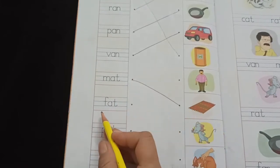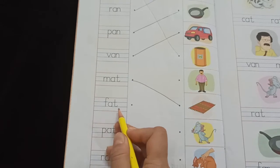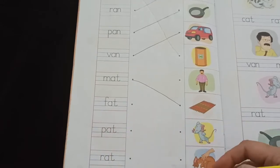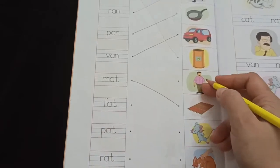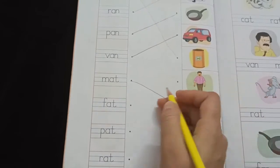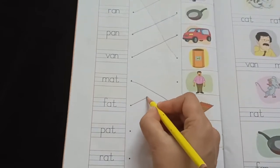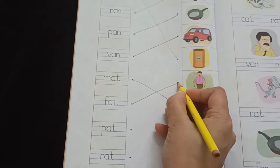Next is F-A-T, Fat. Where is fat? Yes. This man is fat. So, let's draw a line.